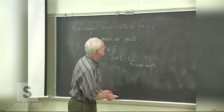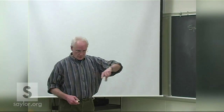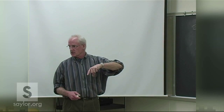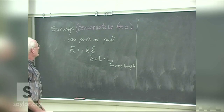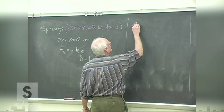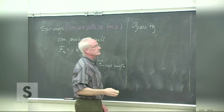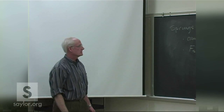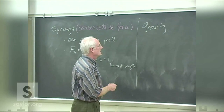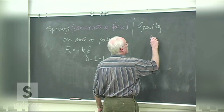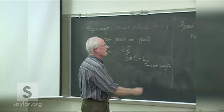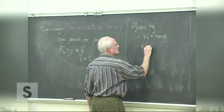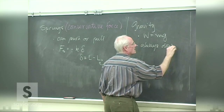A conservative force is one that can return to its original state once everything runs backwards. Springs in this class are conservative — if you let the problem run backwards to its original position, the spring returns to exactly what it was. That's not true of friction: run a problem one way, turn it around and run it back, and you've doubled the amount of friction, not returned to zero. That's an example of a non-conservative force. Our other best example of conservative forces is gravity.